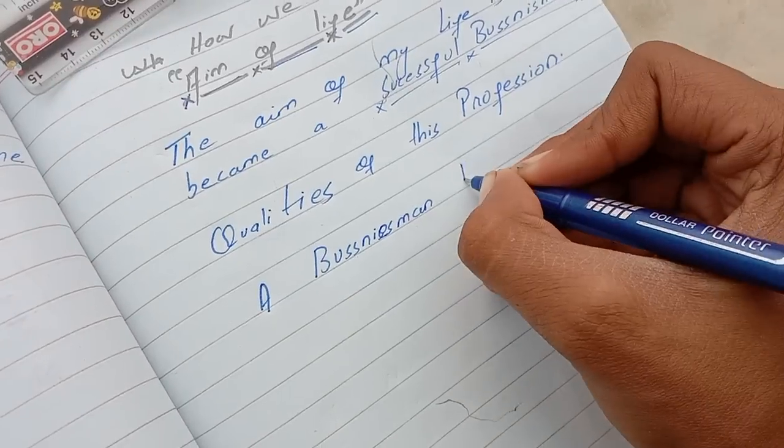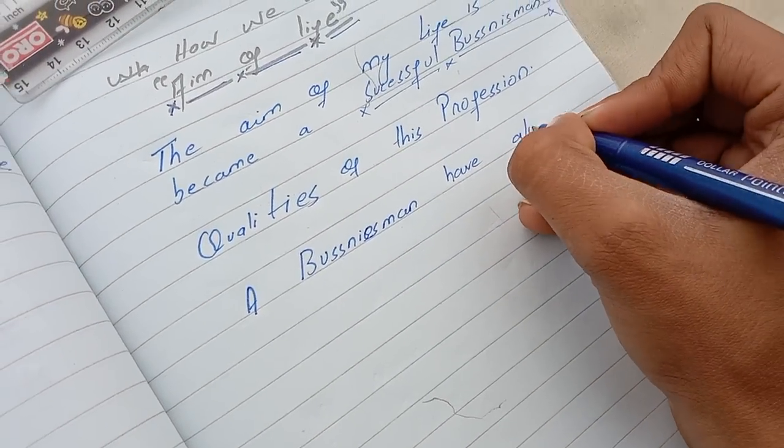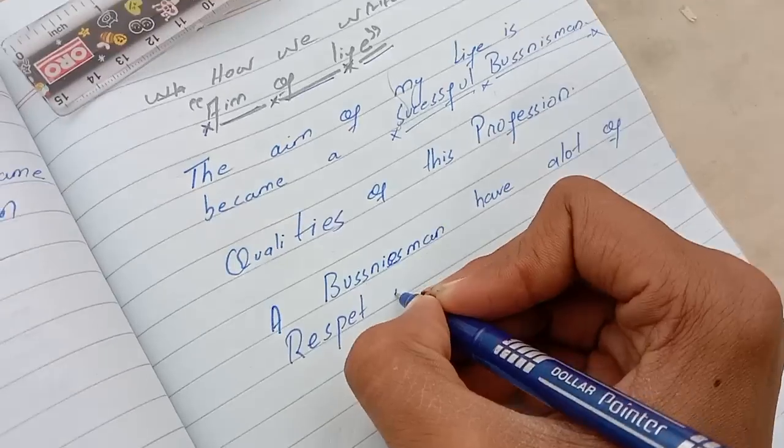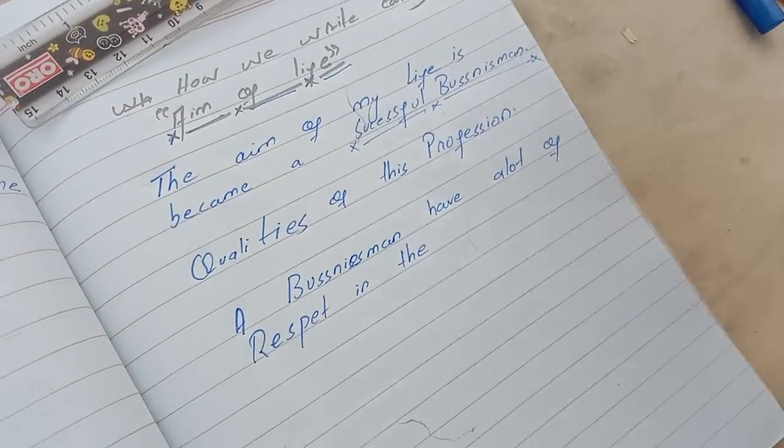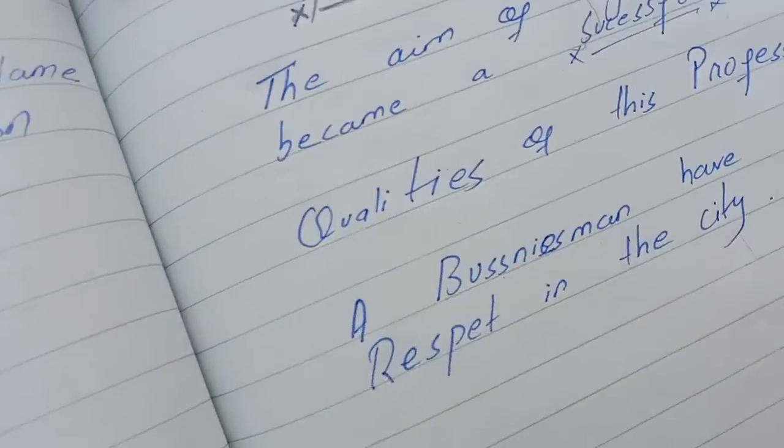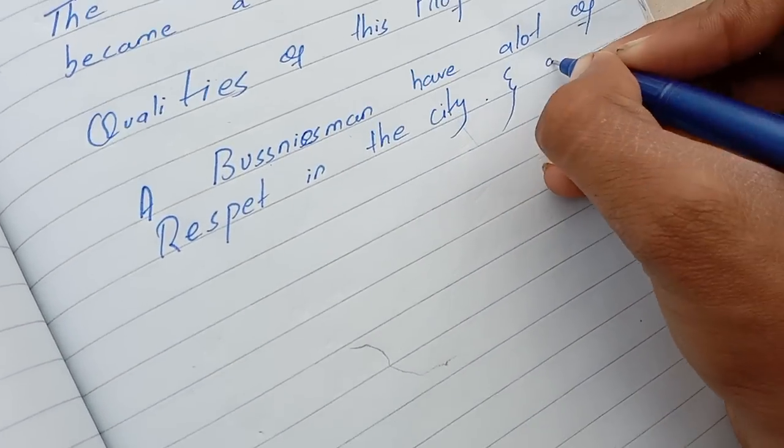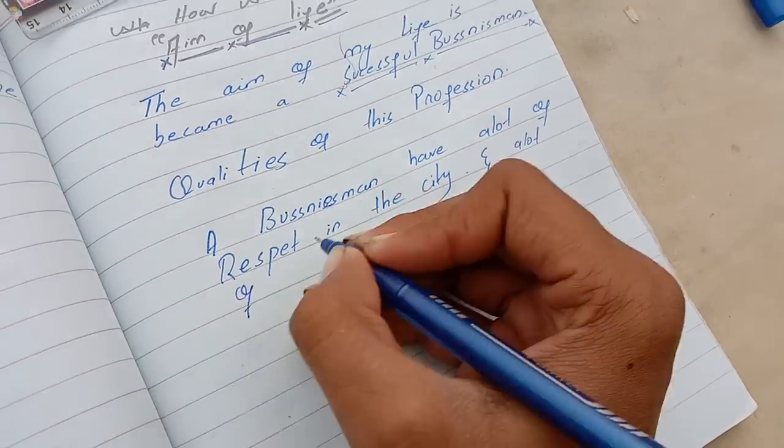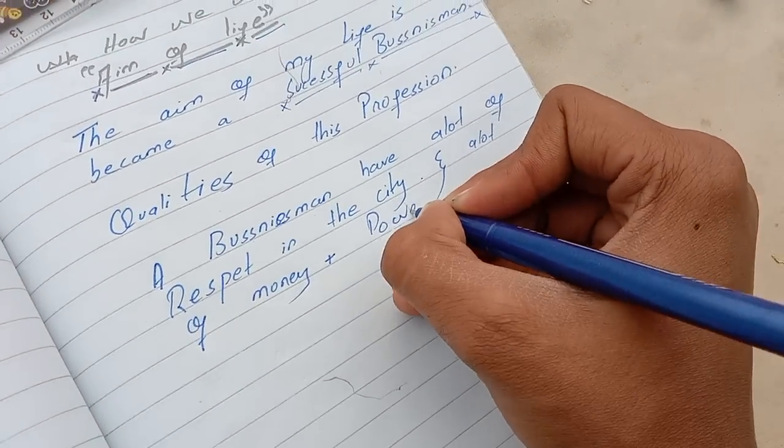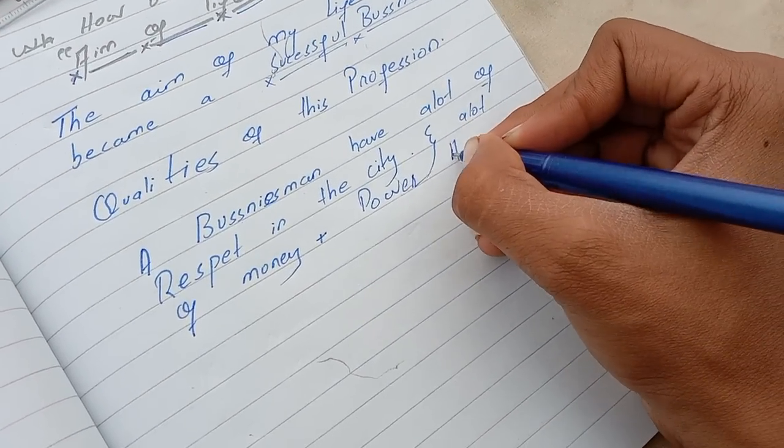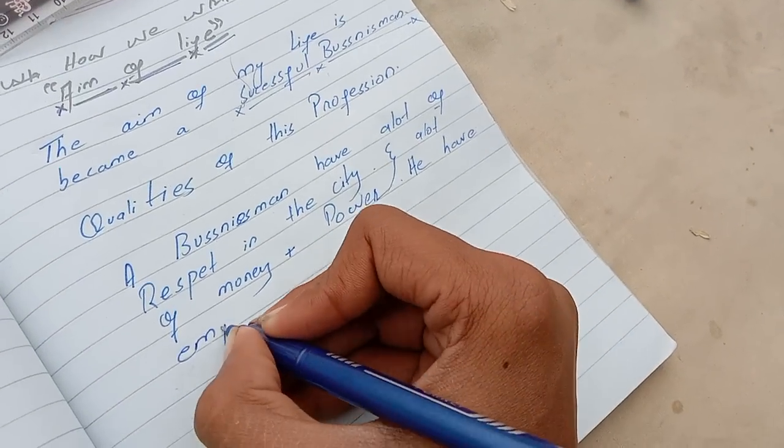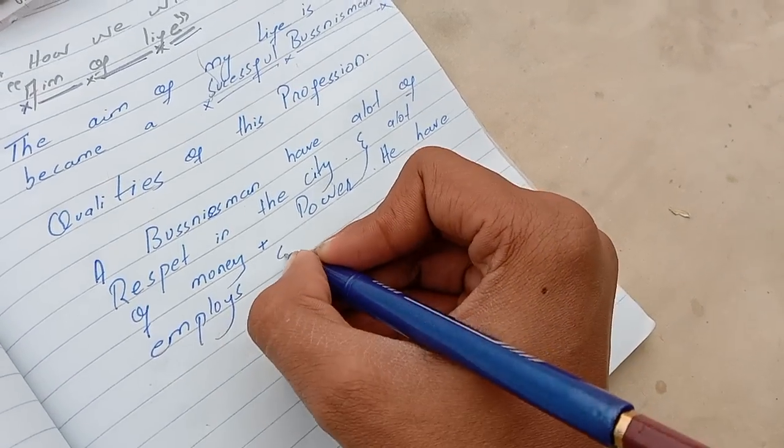For example, the successful businessman - I write down a businessman have a lot of respect in the city. In the city he lives, he has a lot of respect and a lot of money, power. He have many boys and servants.